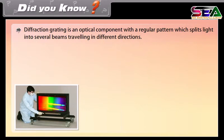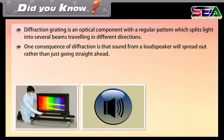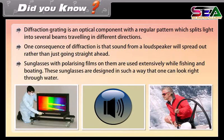Did you know? Diffraction grating is an optical component with a regular pattern which splits light into several beams travelling in different directions. One consequence of diffraction is that sound from a loudspeaker will spread out rather than just going straight ahead. Sunglasses with polarizing films on them are used extensively while fishing and boating. These sunglasses are designed in such a way that one can look right through water. Reflection of waves of sea walls or other barriers can cause an interference pattern called a standing wave. In standing waves, crests do not move laterally.